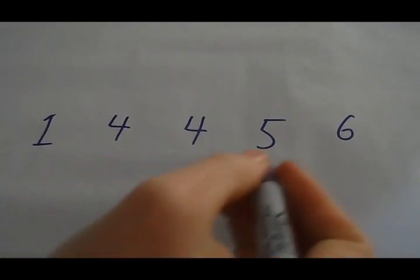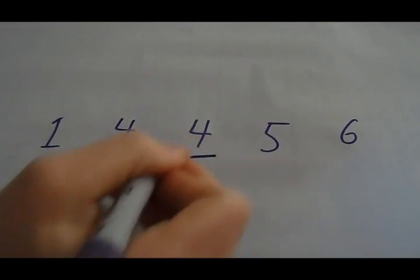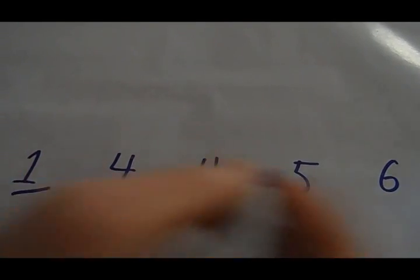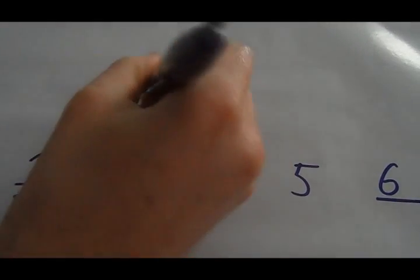find. The mode is a number that occurs the most times. If no number occurs more than the rest, just say there's no mode, no need to stress. Take the smallest number, take the biggest, subtract the two and see